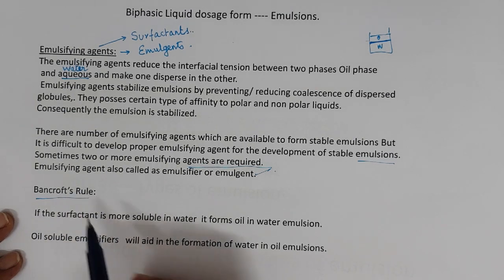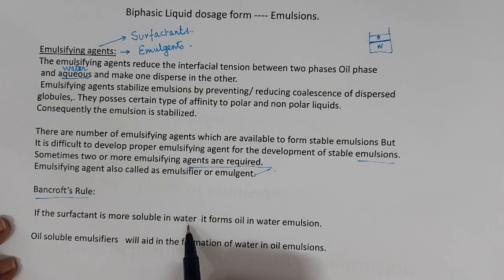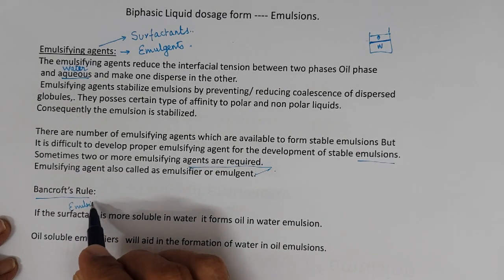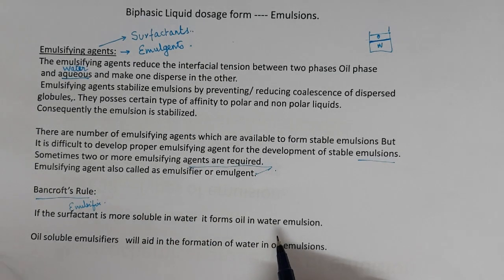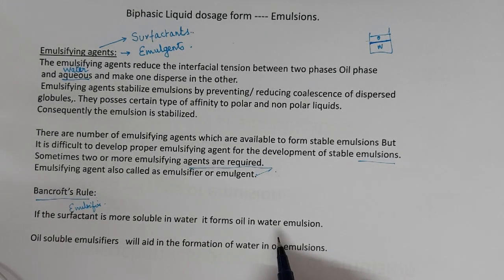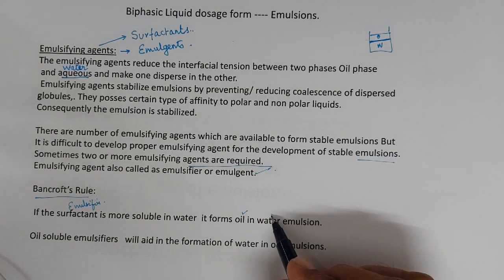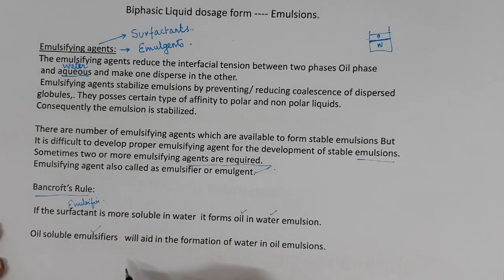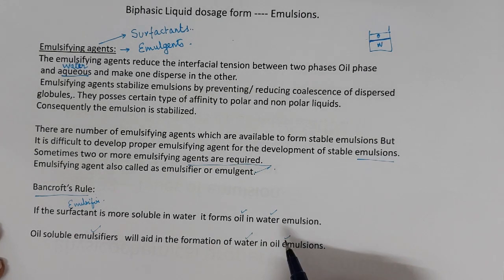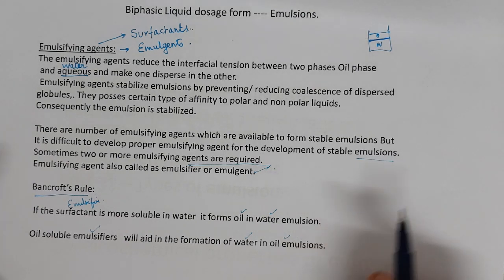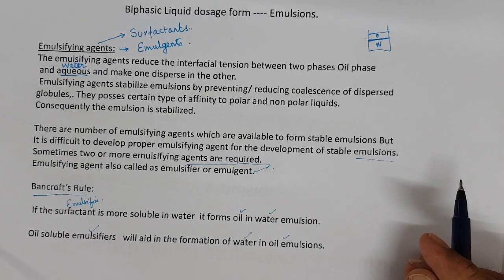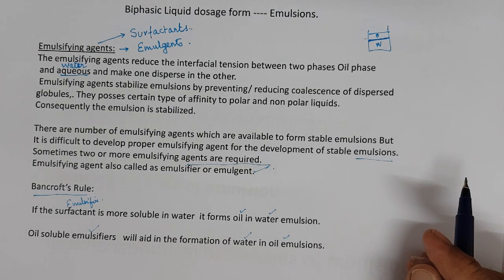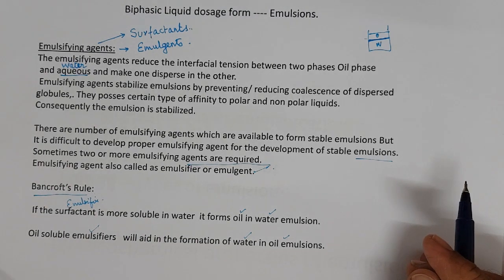There is Bancroft's rule. If the emulsifier is more soluble in water, it forms an oil-in-water emulsion. If the emulsifier is oil-soluble, it will aid in the formation of a water-in-oil emulsion. This is Bancroft's rule.